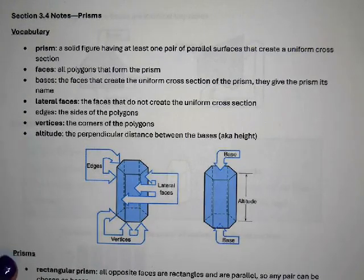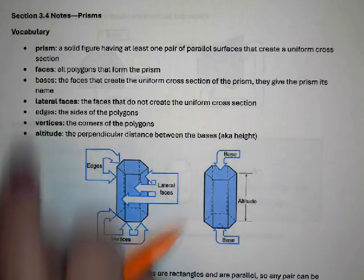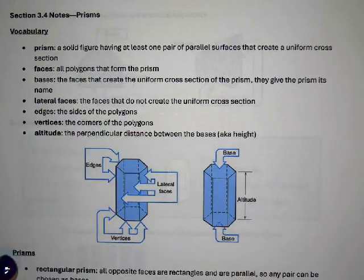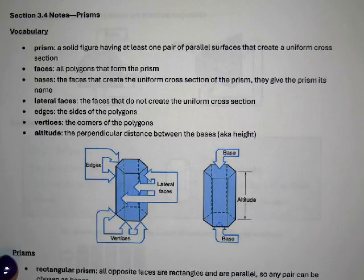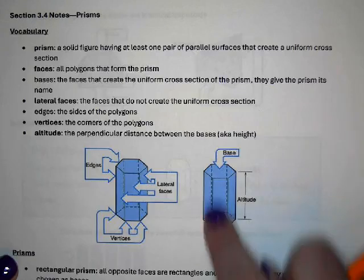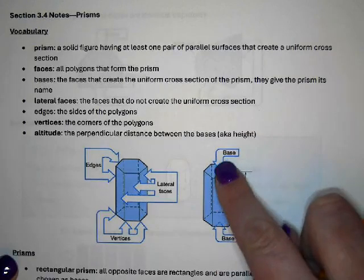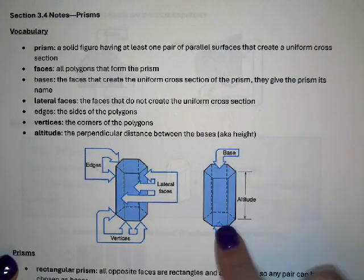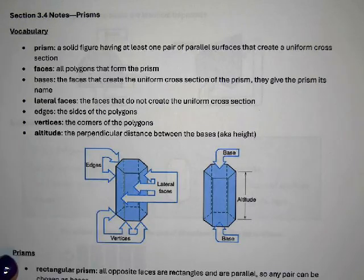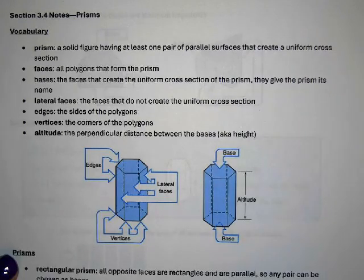This video is on section 3.4 notes on prisms. A prism is a solid 3D figure having at least one pair of parallel surfaces that create a uniform cross-section. The top and the bottom are those parallel surfaces, and a cross-section is like a slice — similar to slicing bread and pulling out a piece that looks like the shape of the top and bottom.